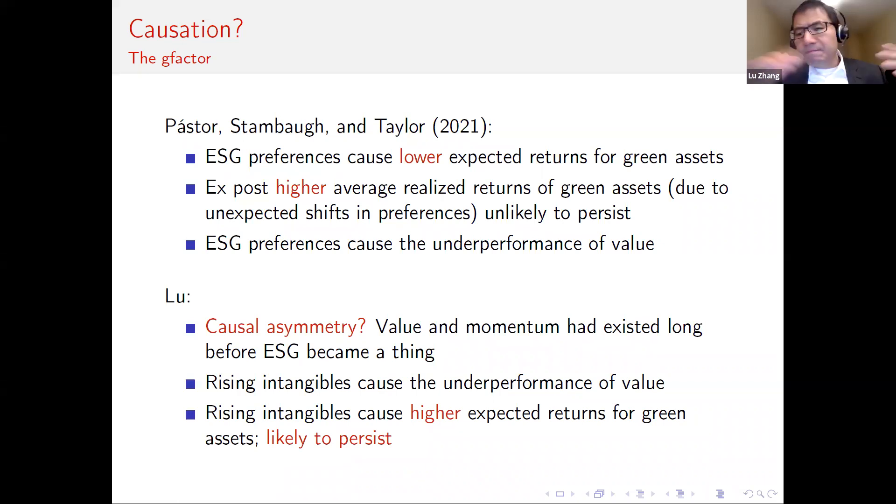So my comment would be, and I'm new in the philosophical literature on causation, but one concept I've learned recently is the thing called causal asymmetry, which is a property of David Hume's notion of causation. In terms of temporal order, the cause has to happen before the effect. But we know that in our context, the value and momentum had existed long before ESG became a thing in the past decade. So what was driving value and momentum in the sample prior to 2010, before ESG became a thing? Must be some other causal mechanism.